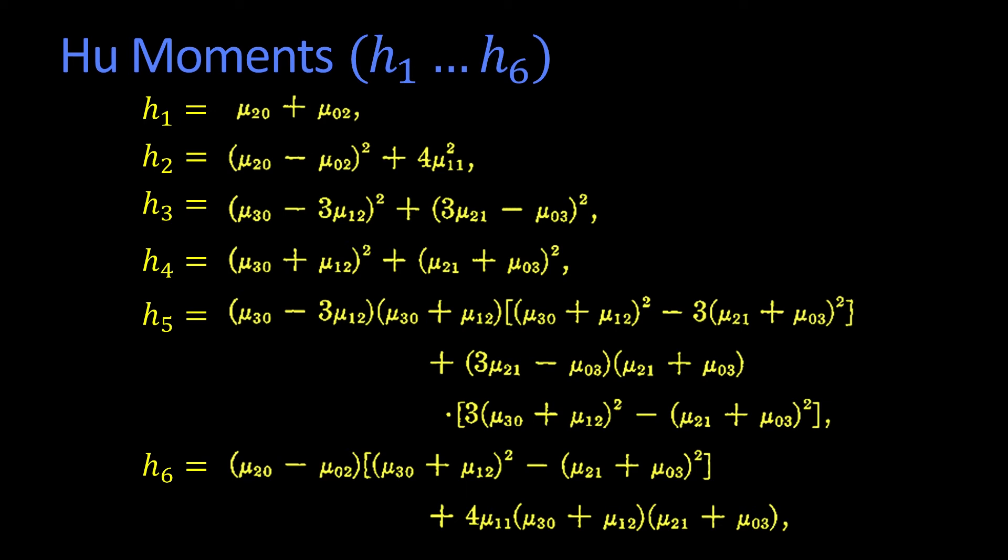And in fact, they're so ugly that they don't even all fit on one page. So you see it says this is H1, and that's mu 2,0. Remember, mu are the central moments, okay, plus mu 0,2. And then they continue H6, and then H7 is even more ugly.